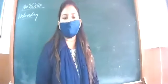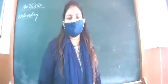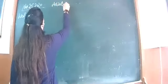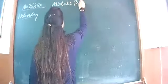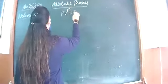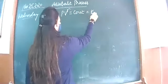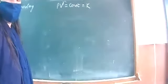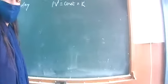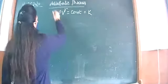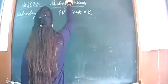Let us now find work done during an adiabatic process. Yesterday we derived the equation of an adiabatic process: pV raised to power gamma equals a constant. Let us say that constant is k.